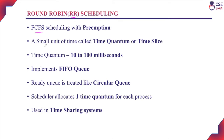In the Round-Robin scheduling algorithm, a small unit of time called the time quantum or the time slice will be implemented for all processes. The process will execute with the CPU only for the specified time quantum. Once the time quantum is over, the executing process will leave the CPU and the next process in the job queue will be selected and assigned to the CPU for execution.